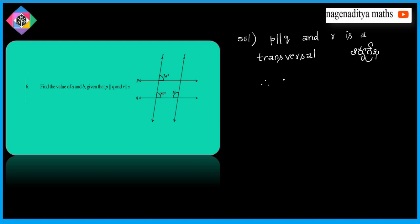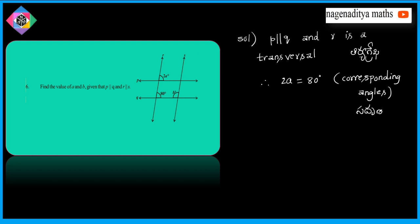Therefore, 2A is equal to 80 degrees — corresponding angles. This implies A is equal to 80 divided by 2, that is equal to 40 degrees.